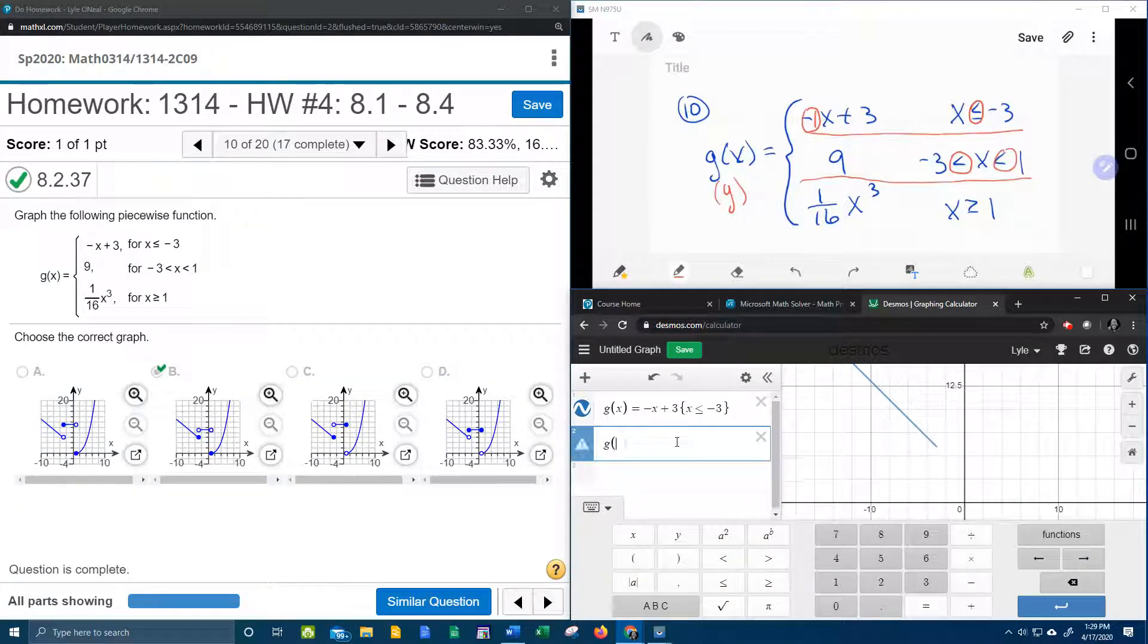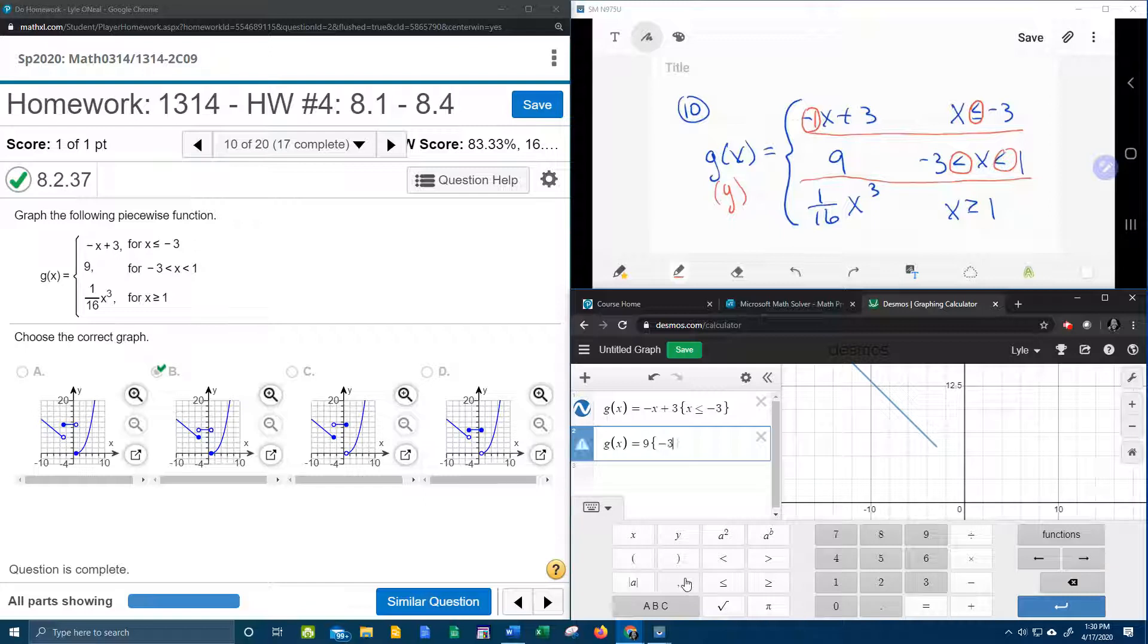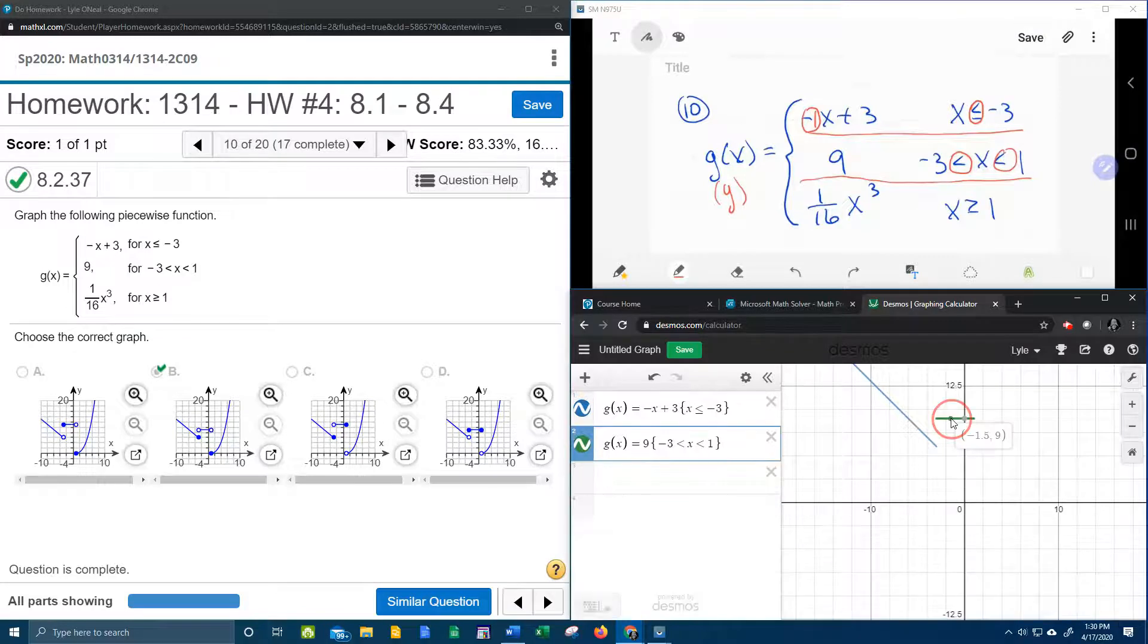Next piece, we can say g of x equals, the middle function was 9, and then remember to do the restriction, we need to grab our braces, and we're going to say negative 3 less than x less than 1, enter. And then there's our middle piece, and if I click and drag, look at that, open circle, open circle. So that verifies that we have an open circle on each end of this line.